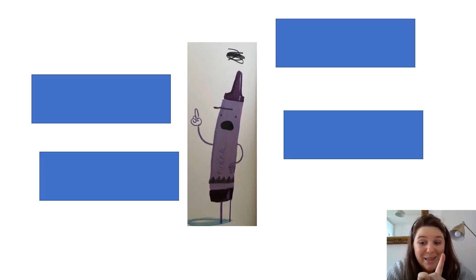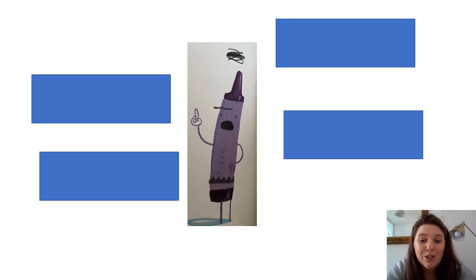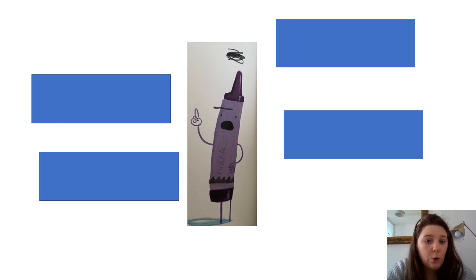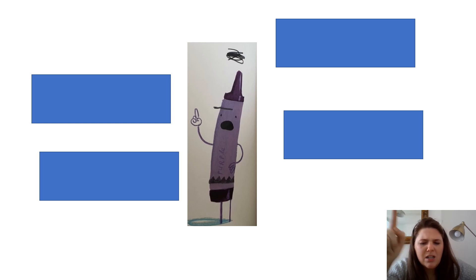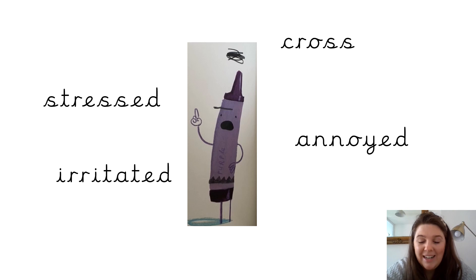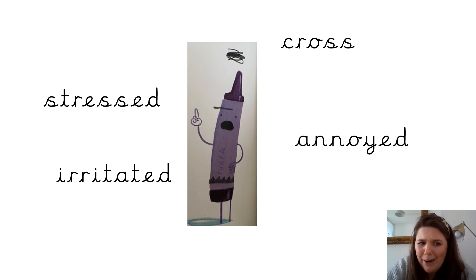You can see that I've taken the picture of the purple crayon and written four words around him - adjectives to describe how the purple crayon is feeling. I looked at the picture, thought back to the text, and matched his emotion with a word. Pause the video and write down one word to describe how purple crayon is feeling. Hopefully you've got something similar to me - I've written the words cross, annoyed, stressed, and irritated around the purple crayon.